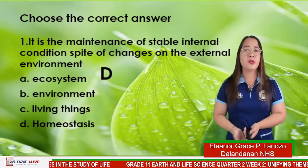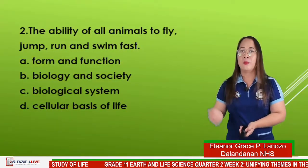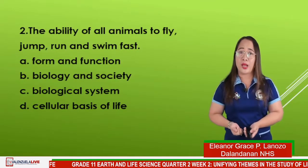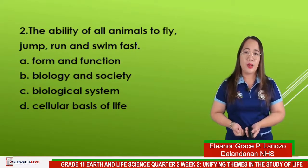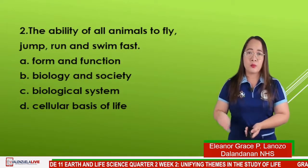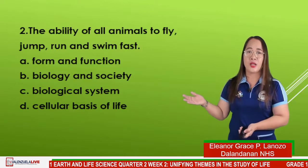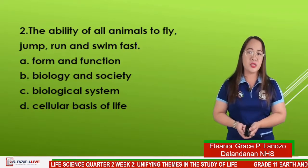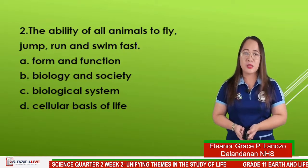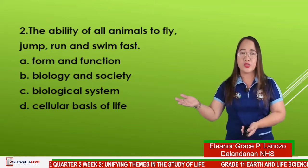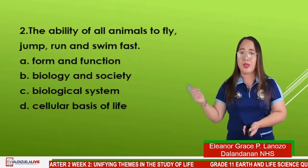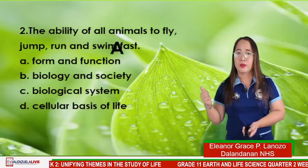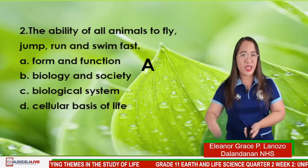Number 2 question: the ability of all animals to fly, jump, run, and swim. A — form and function, B — biology and society, C — biological system, D — cellular basis of life. The answer is letter A.